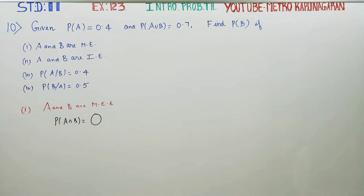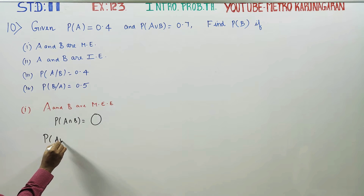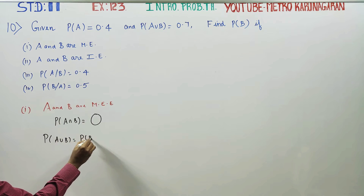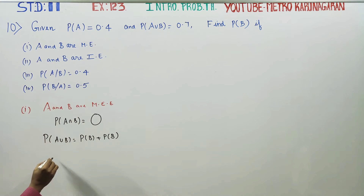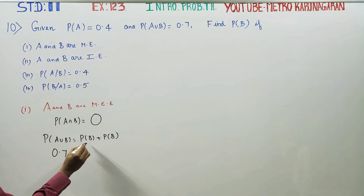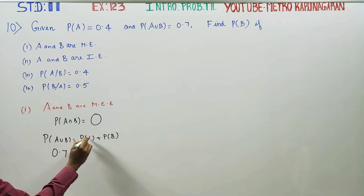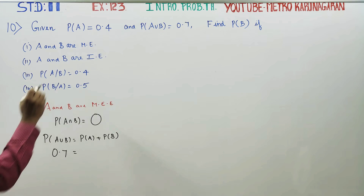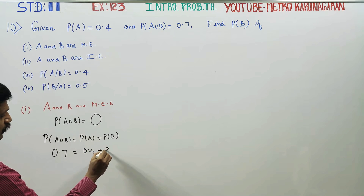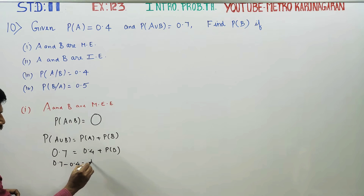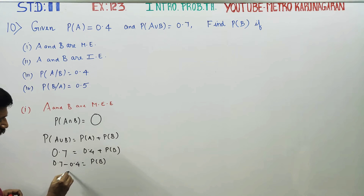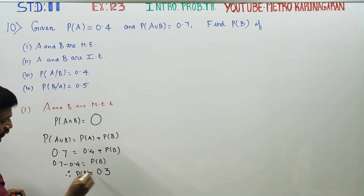With this information, let's start the sum. The formula is P(A∪B) = P(A) + P(B), since there is no intersection term for mutually exclusive events. Substituting: 0.7 = 0.4 + P(B). Therefore, P(B) = 0.7 − 0.4 = 0.3. This is our first result: P(B) = 0.3.